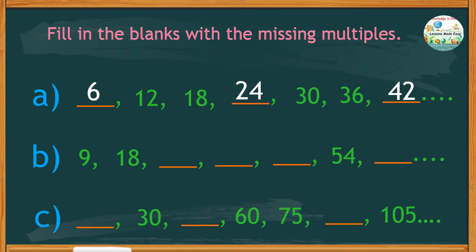For set B, the missing multiples are 27, 36, 45, and 63. This set shows the multiples of 9.